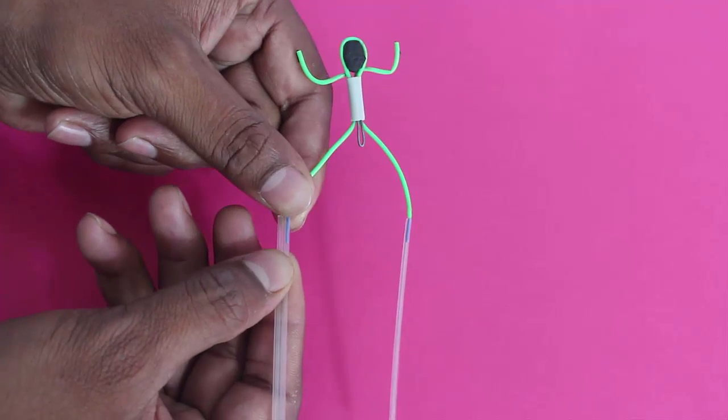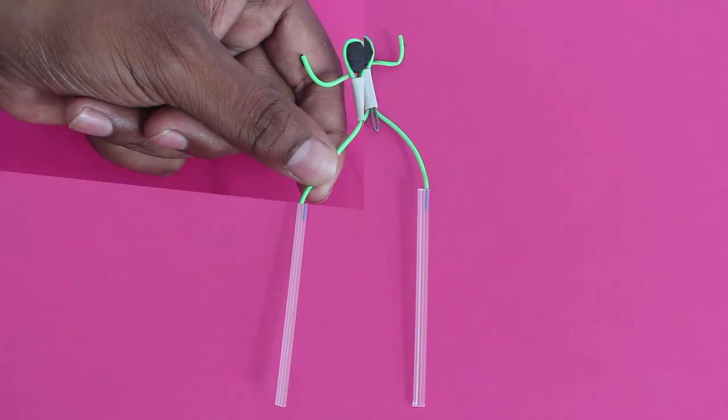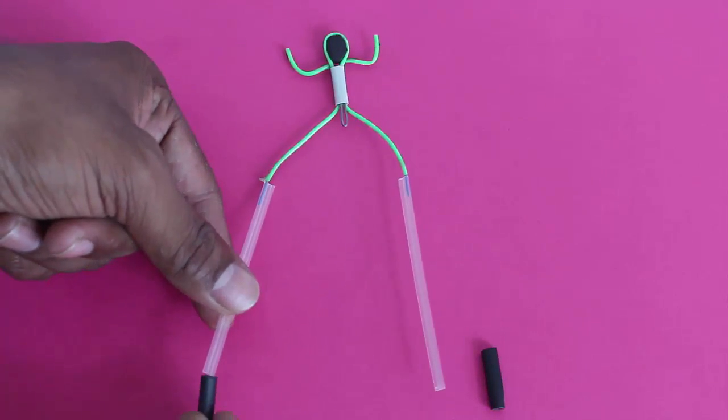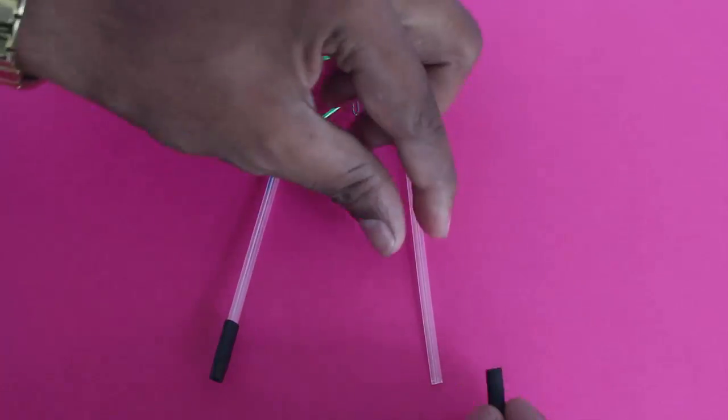Now this is the other coffee stirrer. This will increase the weight and also the stability of the model. Now you have made a wireman with long legs.